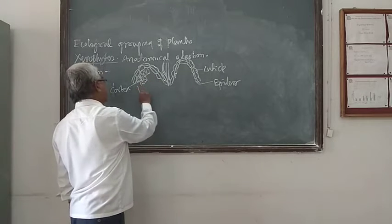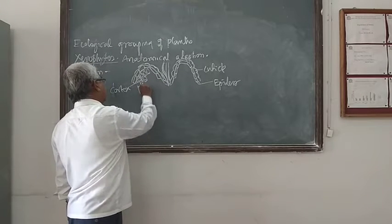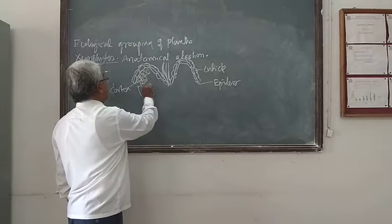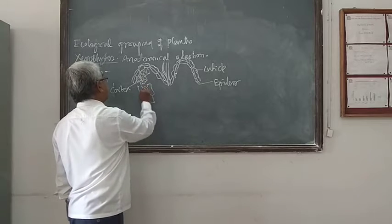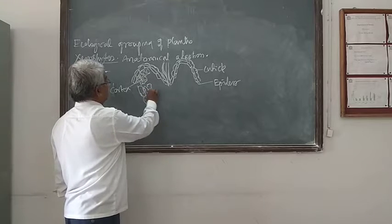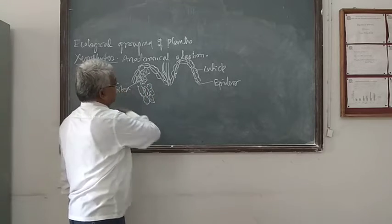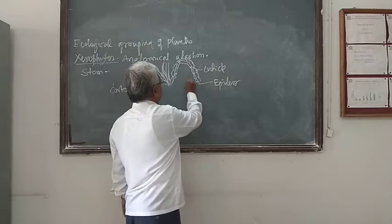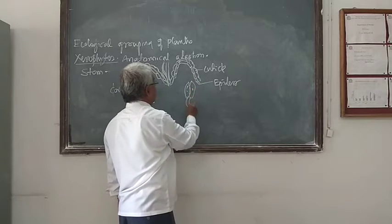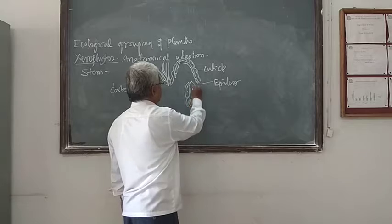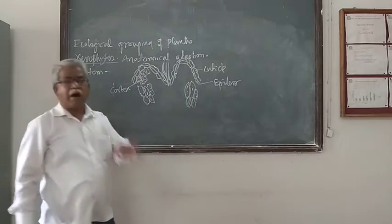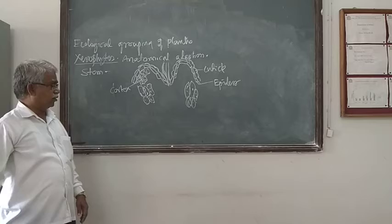The stem is sometimes green in color — a green stem — and sometimes the palisade tissue is also present within it. Such type of palisade tissue is present within the stem, like this. This palisade tissue has been placed below the outer epidermis, and that part is a part of the outer cortex itself.